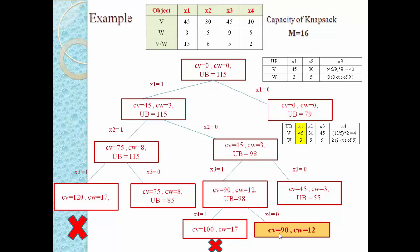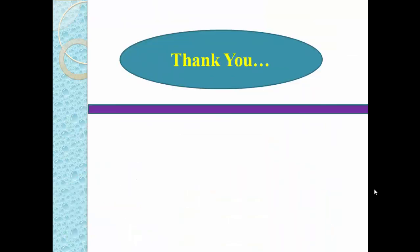The maximum value of our knapsack is 90. This is achieved by selecting object 1, not selecting object 2, selecting object 3, and not selecting object 4 — giving the solution vector 1, 0, 1, 0. This is all about how we can find the solution to the Knapsack problem using the backtracking concept. Thank you very much for watching this video.